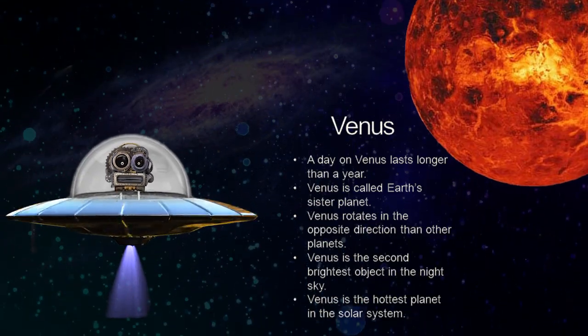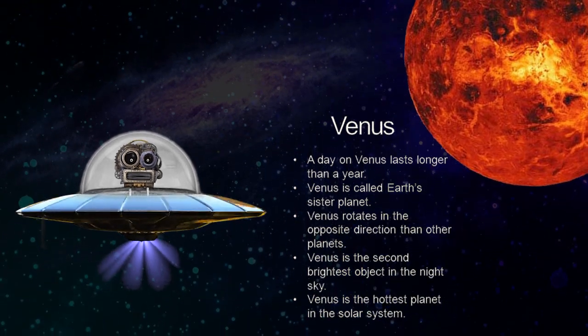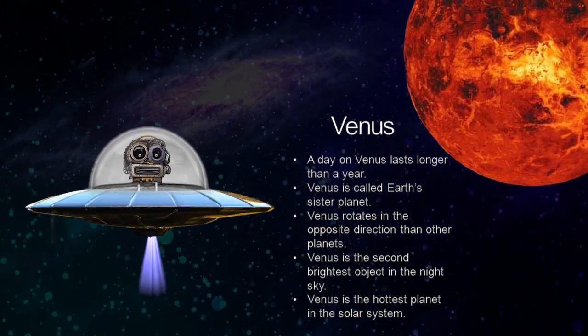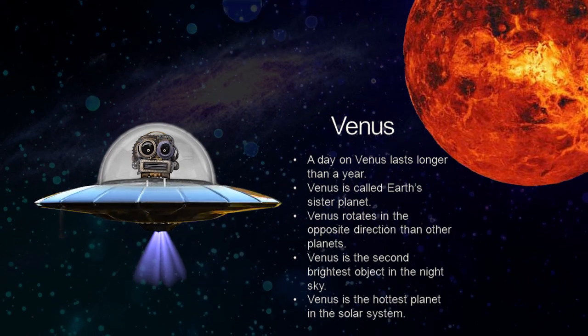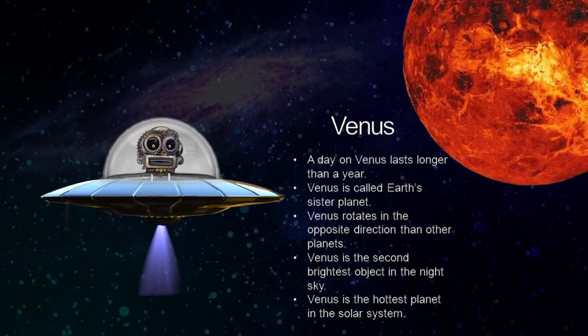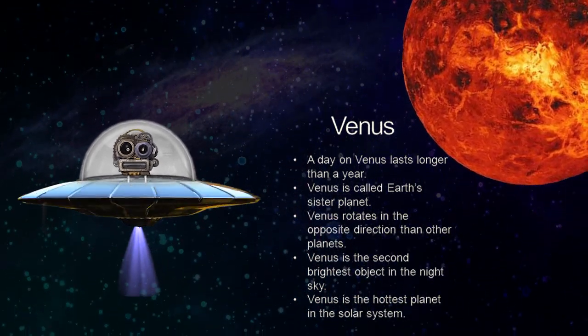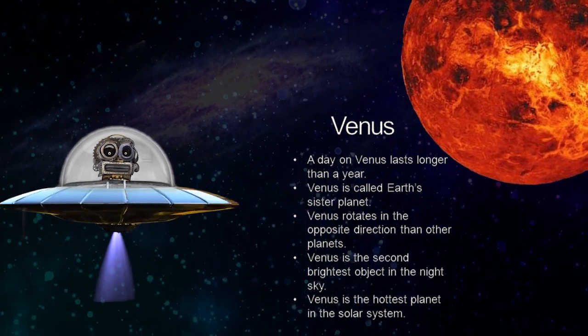Venus is the second planet from the sun and it is the hottest planet in the solar system. That's because it has high amounts of carbon dioxide, which traps heat inside it.